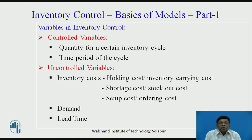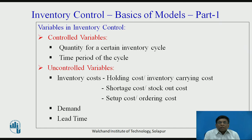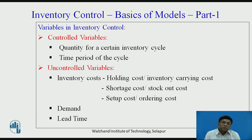Uncontrolled variables are like different inventory-related costs such as holding cost, also called inventory carrying cost; shortage cost, also called stock-out cost; and setup cost or ordering cost. Demand in the market for any product is always unpredictable — you can never control it. One more parameter is lead time, which is the time between placing the order for certain material and receiving it. There are many parameters which control lead time, making it very difficult to control. Hence, inventory costs, demand for items, and lead time fall under uncontrolled variables and are the major uncontrolled variables in inventory control.